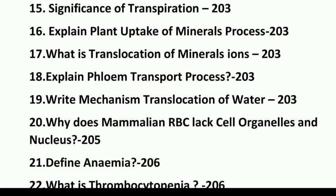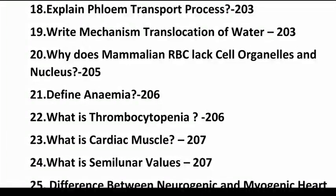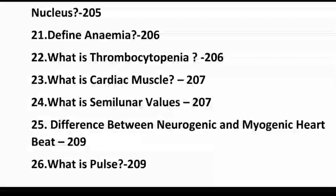Why does the mammalian RBC lack cell organelles and nucleus? This is important — page number 22. Define anemia — page number 22. What is thrombocytopenia? This is important. What is cardiac muscle? What is blood? What is pulse? I will ask questions about 2 marks. What is the difference between neurogenic and myogenic heartbeat?